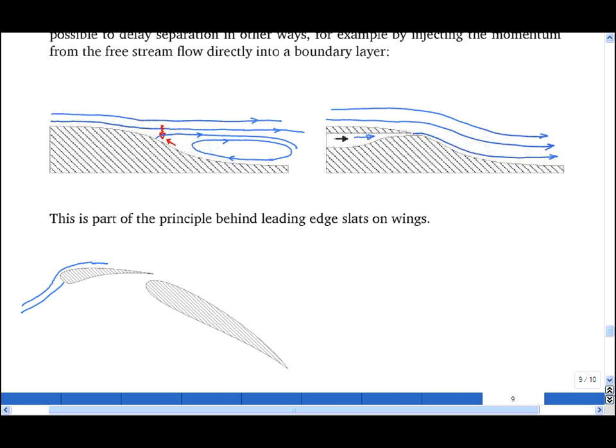The flow around the front of the slats by this point is becoming tired, low-momentum, so at that point some fast air comes in underneath, injecting high-momentum fluid into the boundary layer, which then keeps it attached over the main part of the wing.